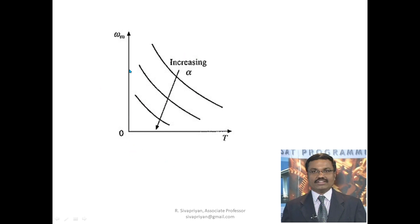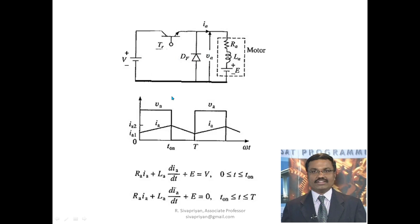Next is chopper control. Whatever we discussed earlier was the half-controlled rectifier; now for chopper control, it is also more or less similar. The chopper operation everything remains the same — the only difference is that E will be variable. If you want, you can add the field winding in series here.